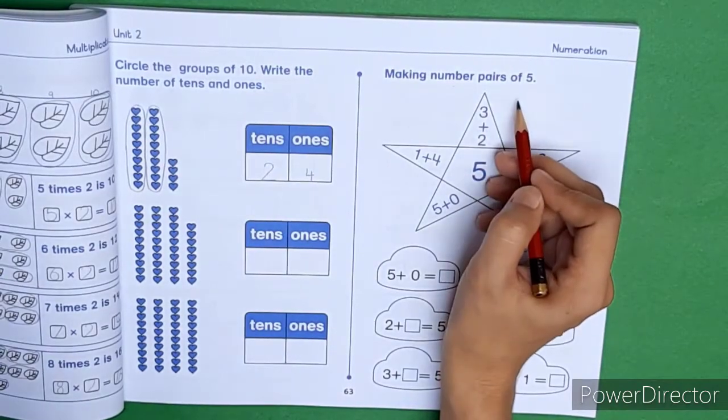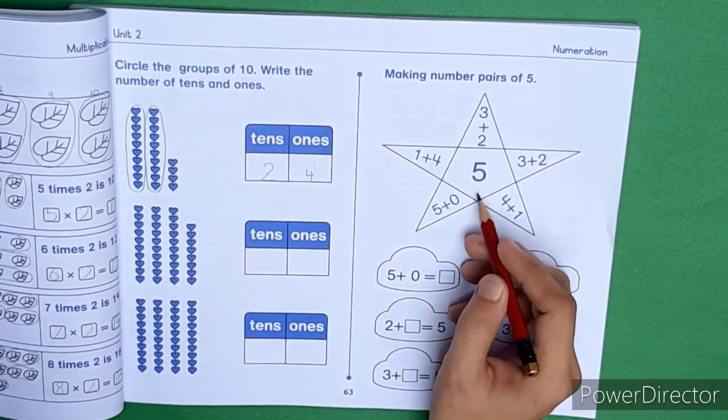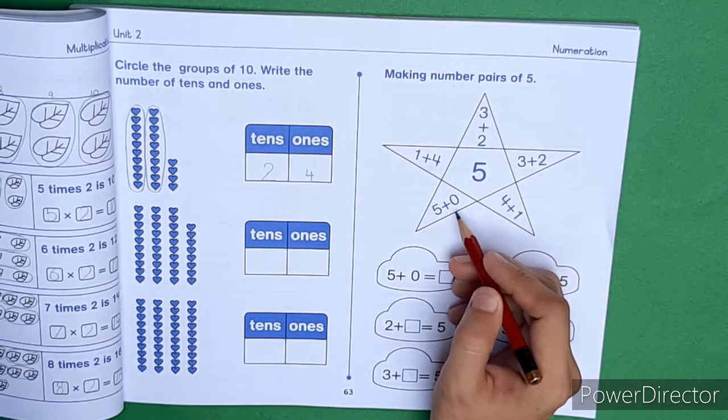Making numbers, we have to solve this. Now we will see how 5 is going to be, which result will be 5. 5 plus 0 is equal 5, 4 plus 1 is 5, 3 plus 2 is 5, 1 plus 4 is 5.